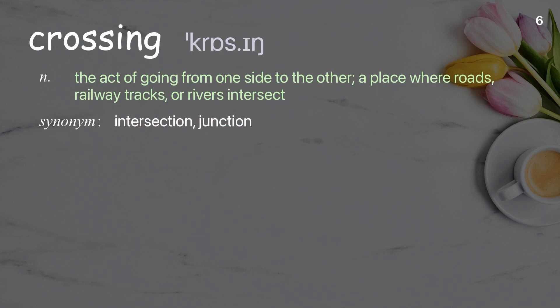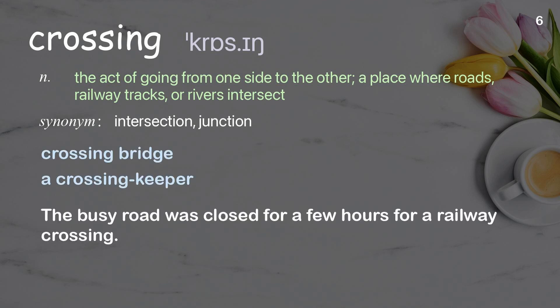Crossing: The act of going from one side to the other; a place where roads, railway tracks, or rivers intersect. Examples: Crossing bridge. A crossing keeper. The busy road was closed for a few hours for a railway crossing.